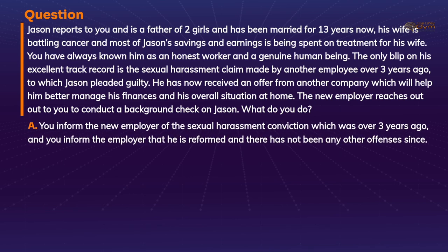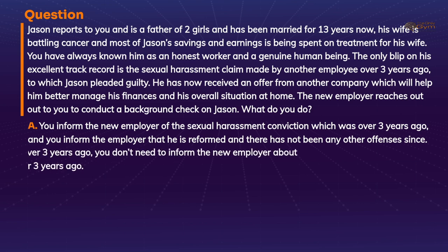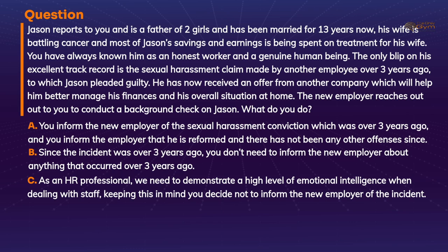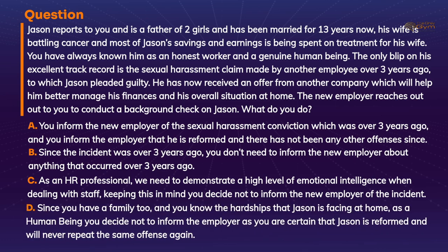A: You inform the employer of the sexual harassment conviction which was over three years ago, and inform the employer that he is reformed and there have not been any other offences since. B: Since the incident was over three years ago, you don't need to inform the employer about anything that occurred over three years ago. C: As an HR professional, we need to demonstrate a high level of emotional intelligence when dealing with staff. Keeping this in mind, you decide not to inform the new employer of the incident. D: Since you have a family too and you know the hardships Jason is facing at home, as a human being, you decide not to inform the employer as you are certain that Jason is a reformed man and will never repeat the same offences again.